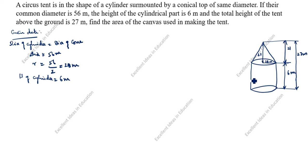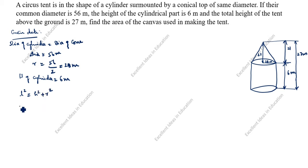Now we need to find the slant height of the cone. The formula is: l² = h² + r², so l = √(h² + r²), where l is the slant height.